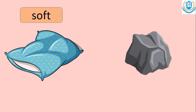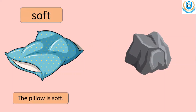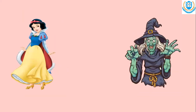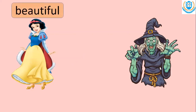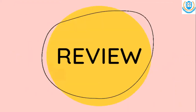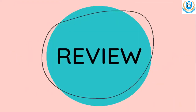Soft — the pillow is soft. Hot — the stone is hot. Beautiful — Snow White is beautiful. Ugly — the fish is ugly. Okay, so level one, let's review.